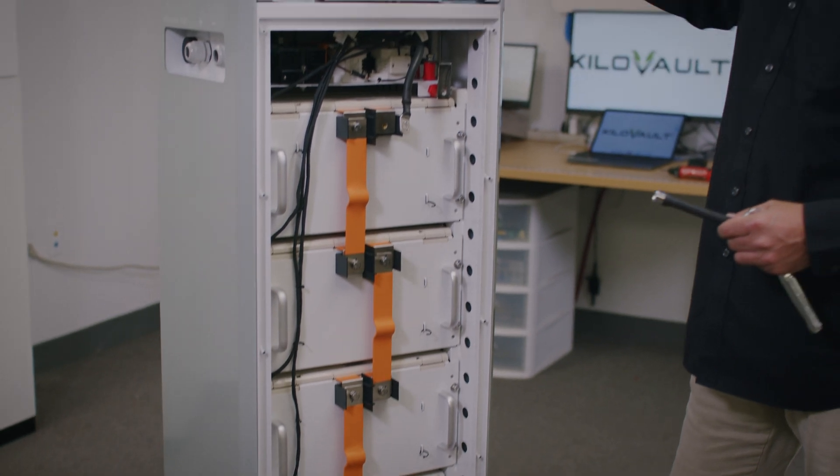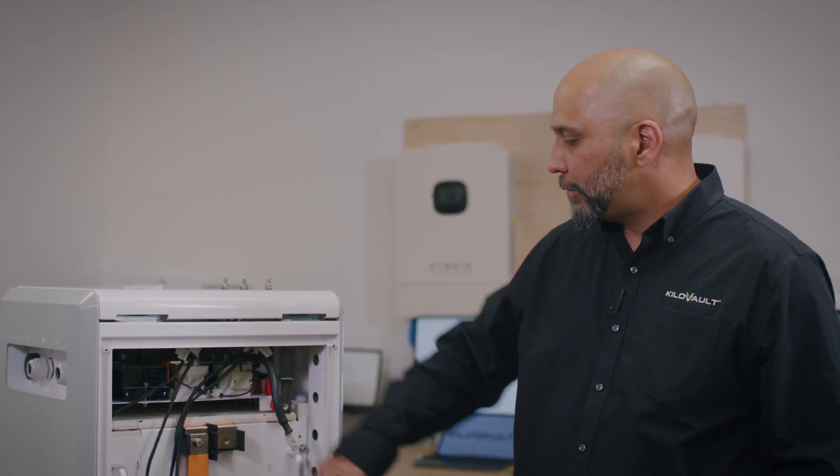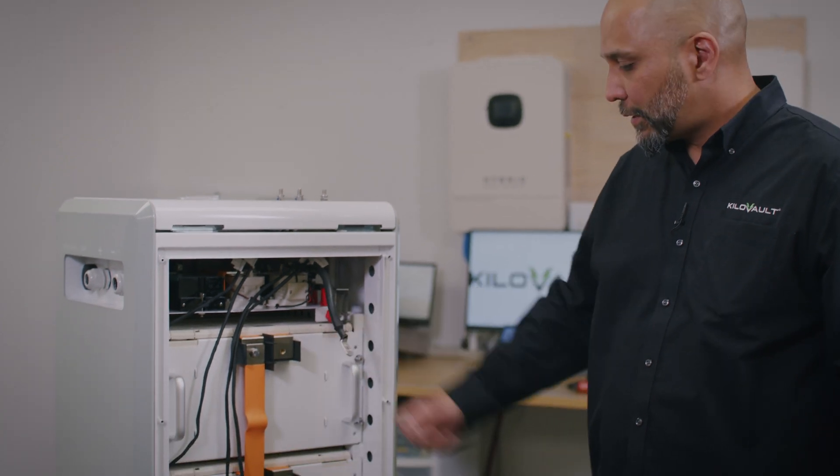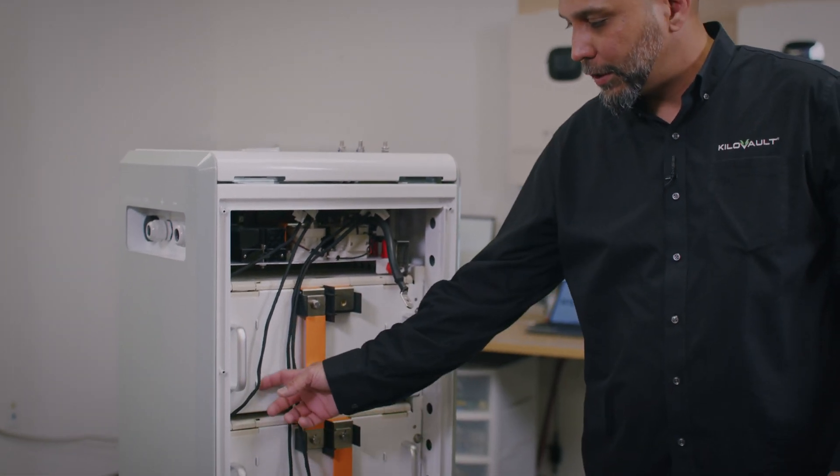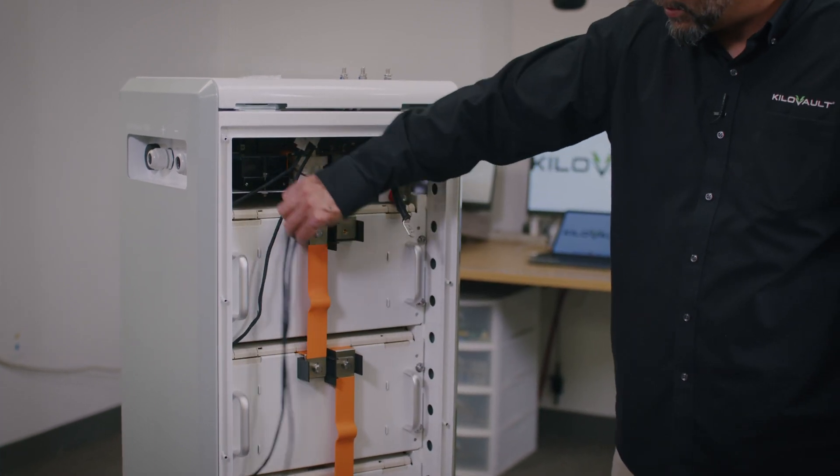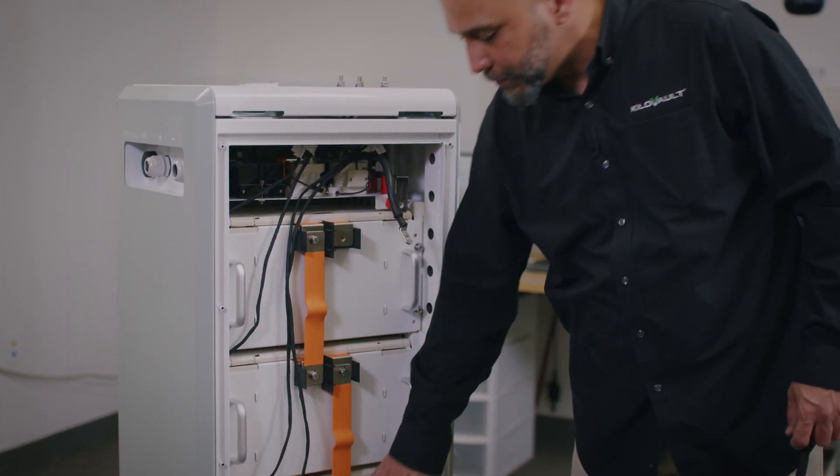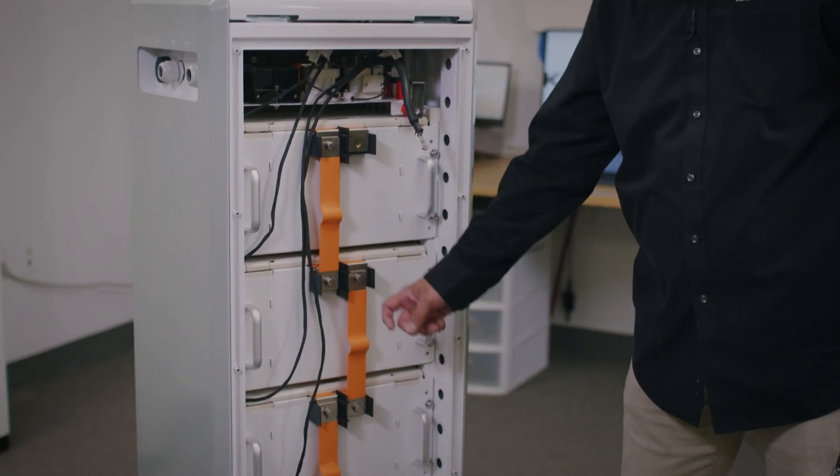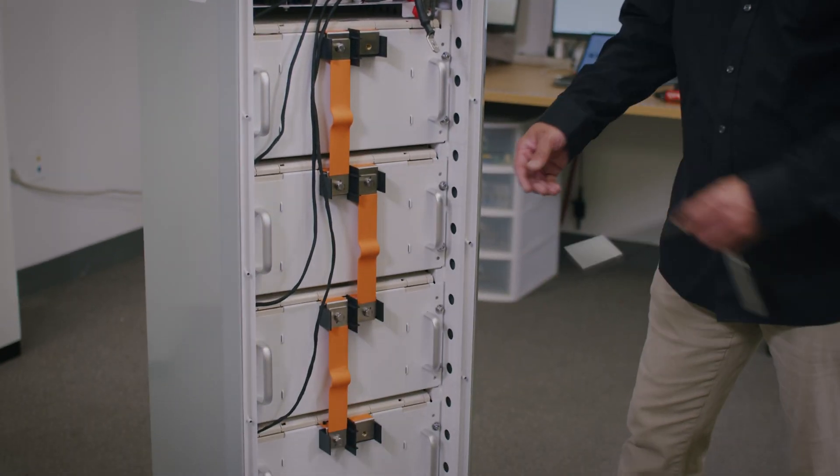Now this makes it safe for us to actually remove the modules. We've removed the positive and negative terminals and we've cut off all the tie wraps to make sure all the cables are loose. Next step is removing the bus bars, these orange bus bars here. We're going to remove them one by one.